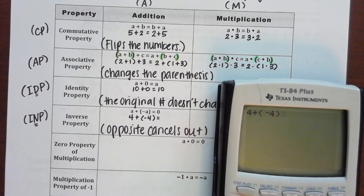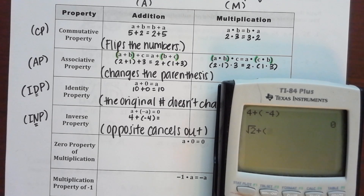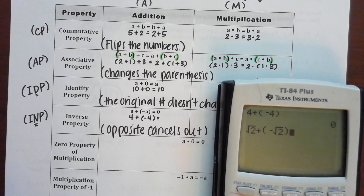What did you get? Zero. It doesn't matter what number you use — whether it's a decimal, a fraction, rational or irrational — if you add it by its opposite it should cancel out. So type in the square root of two plus the opposite of the square root of two.